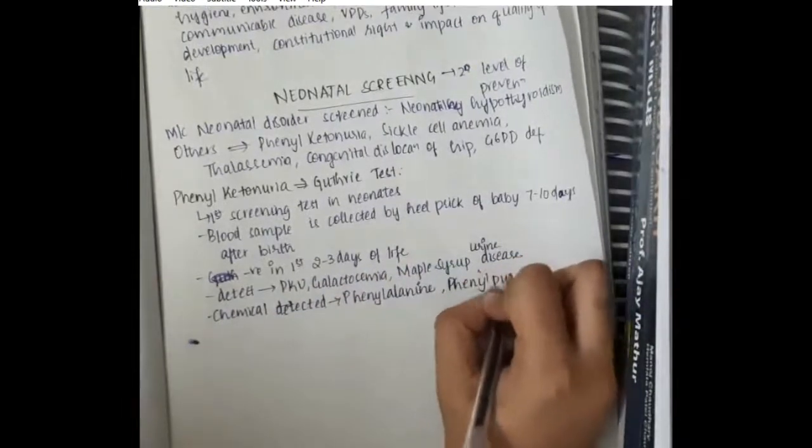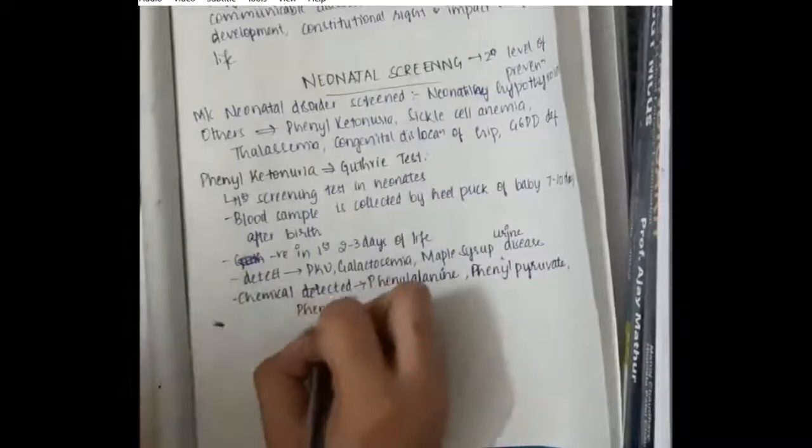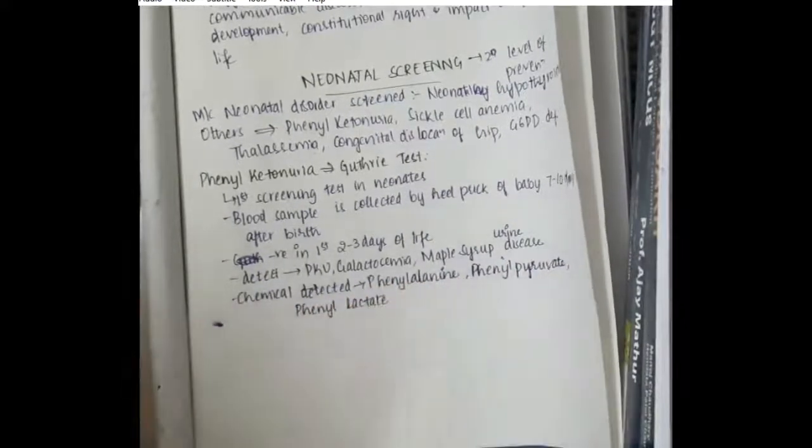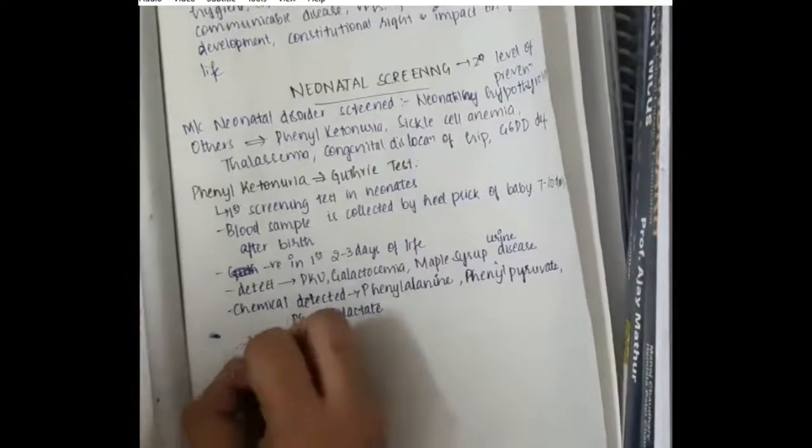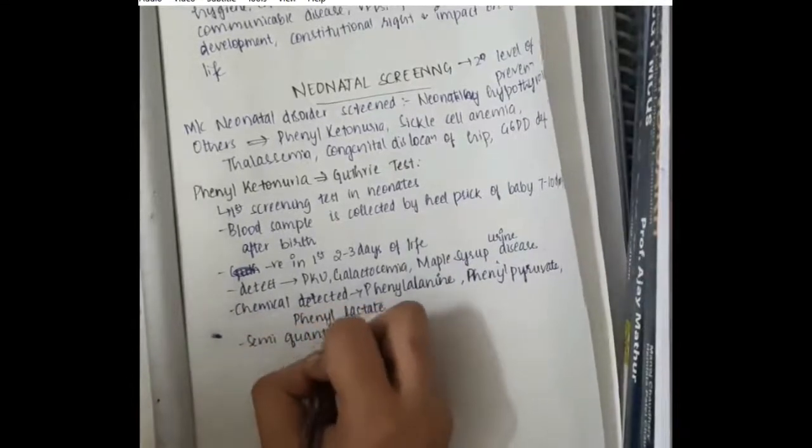Chemicals like phenylalanine, phenylpyruvate, phenylacetate are detected in this Guthrie test. This Guthrie test is a semi-quantitative test.